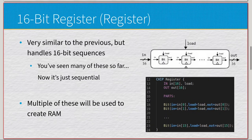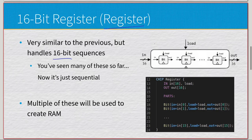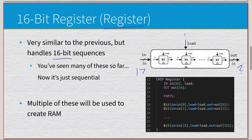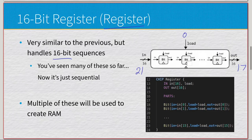We can scale that up — here is the 16-bit register, essentially the exact same thing except we use 16-bit sequences because we have a 16-bit computer. These are sequential as opposed to the previous combinational gates. We have 17 as the input. With load set to zero, nothing's happening. Once I choose load equals one, it's stored. Changing back to zero, it continuously stores that data. If I change the input to 21, we still have 17 — we have not told it to load 21 yet.